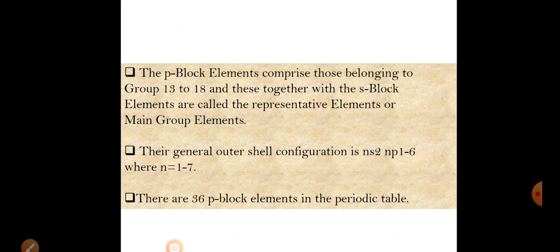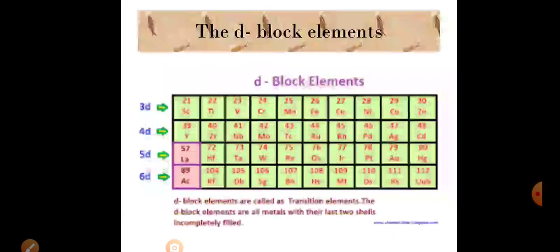The s-block and p-block elements are collectively called representative elements or main group elements. The total number of elements in these blocks is 36. The general electronic configuration for p-block elements is ns² np¹⁻⁶ — for example, np¹ means boron family, np² means carbon family, np³ means nitrogen family.